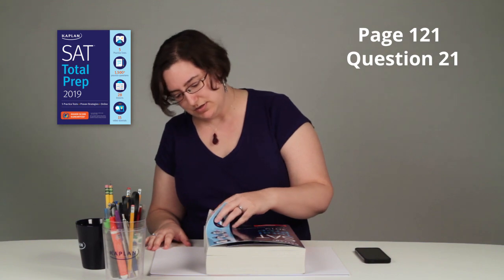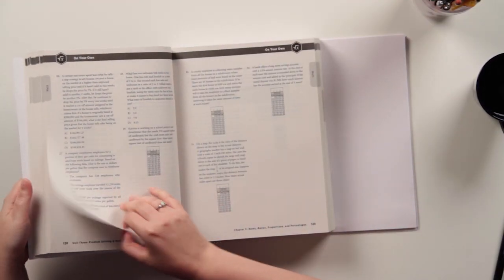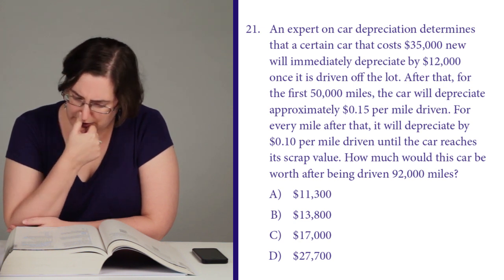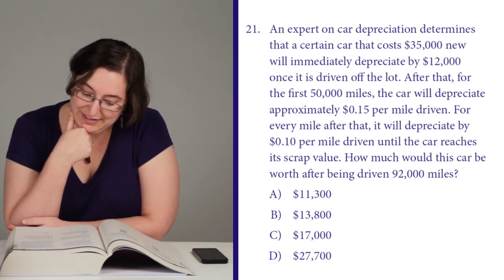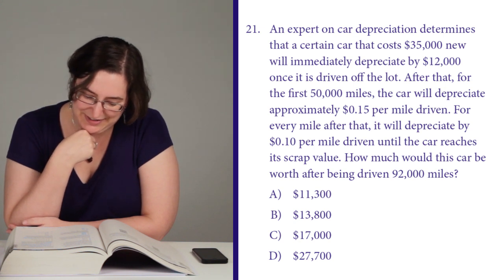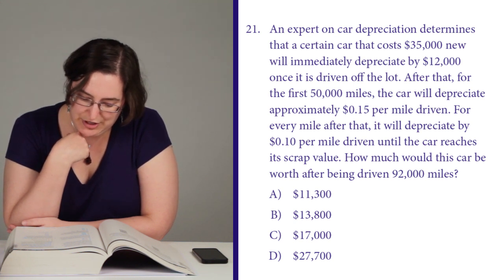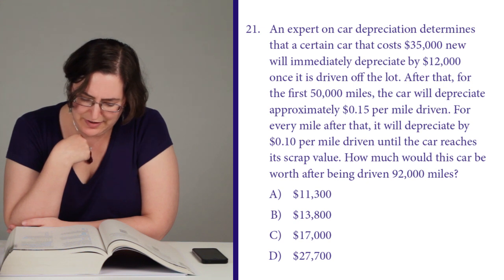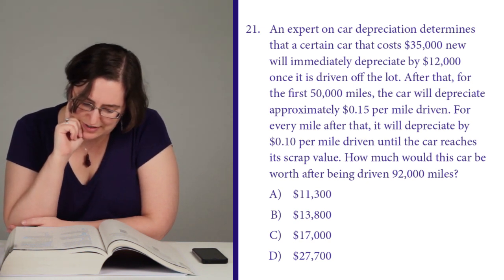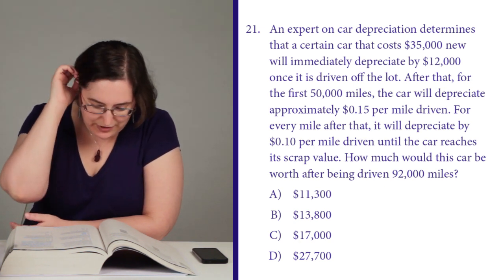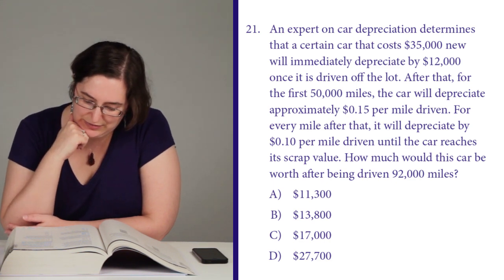I am heading to page 121, number 21. That's a word problem. An expert on car depreciation determines that a certain car costs $35,000 new and will immediately depreciate by $12,000 once it's driven off the lot. After that, for the first 50,000 miles, the car will depreciate approximately $0.15 per mile driven. For every mile after that, it will depreciate by $0.10 per mile driven until the car reaches its scrap value. How much would this car be worth after being driven 92,000 miles?